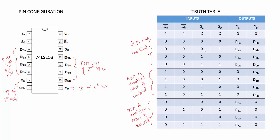When the select line is 0 1, the first data line of each multiplexer gets connected to the output, so YA is D1A and YB is D1B. When the select line is 1 0, YA is D2A and YB is D2B. For the last combination, select line is 1 1, so YA is D3A and YB is D3B.